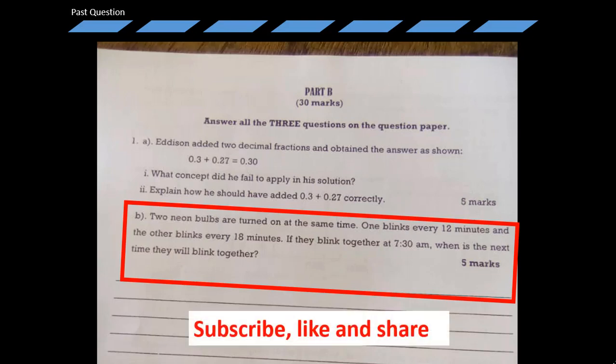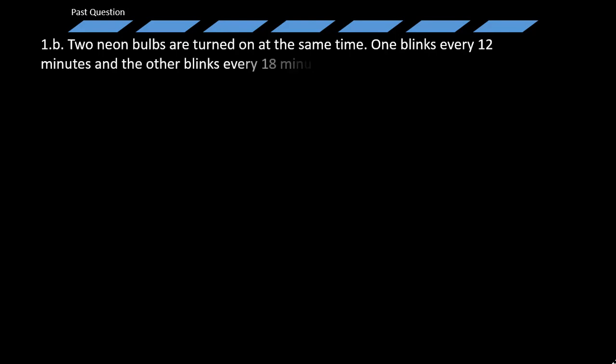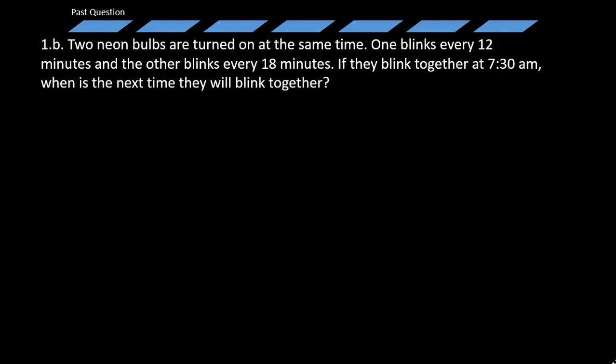Don't forget to subscribe, like and share. Let's look at the question: two neon bulbs are turned on at the same time. One blinks every 12 minutes and the other blinks every 18 minutes. If they blink together at 7:30 a.m., when is the next time they will blink together? Now let's look at a solution.